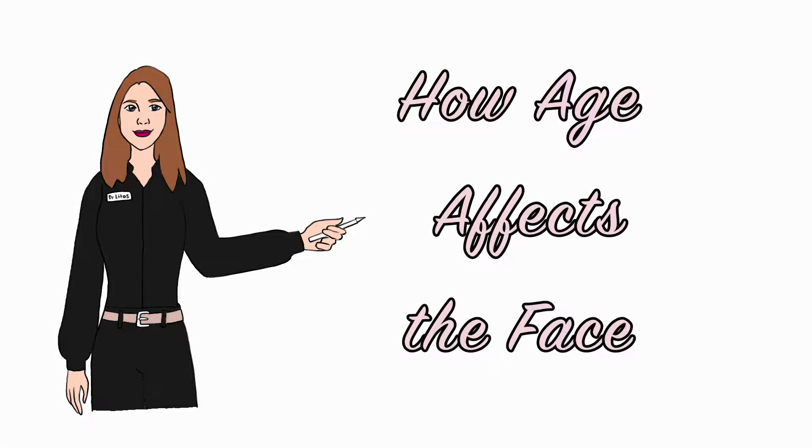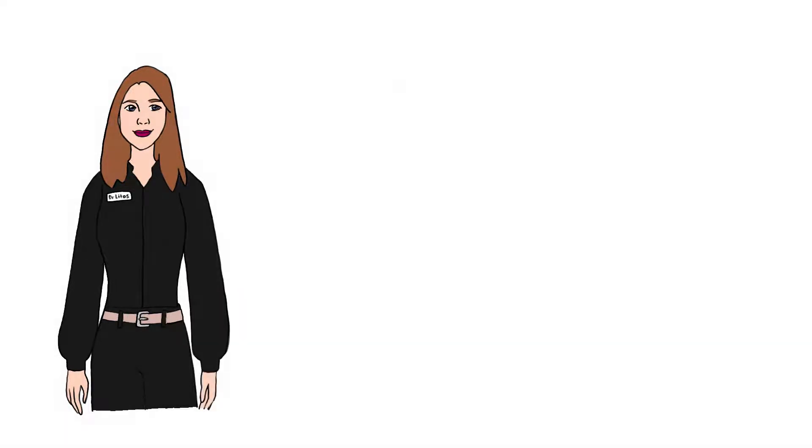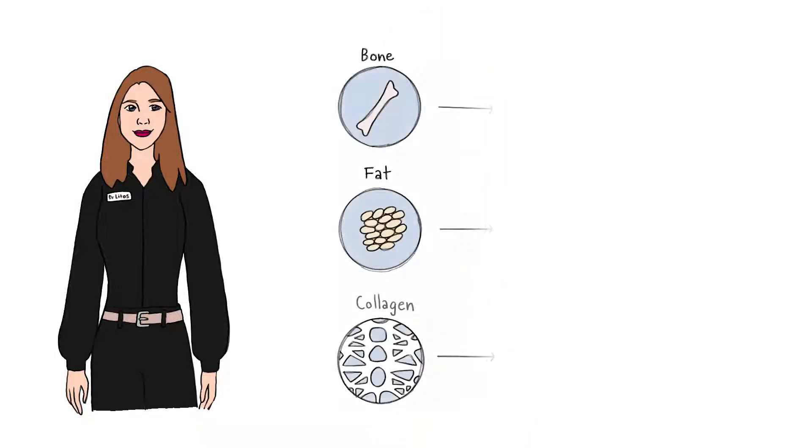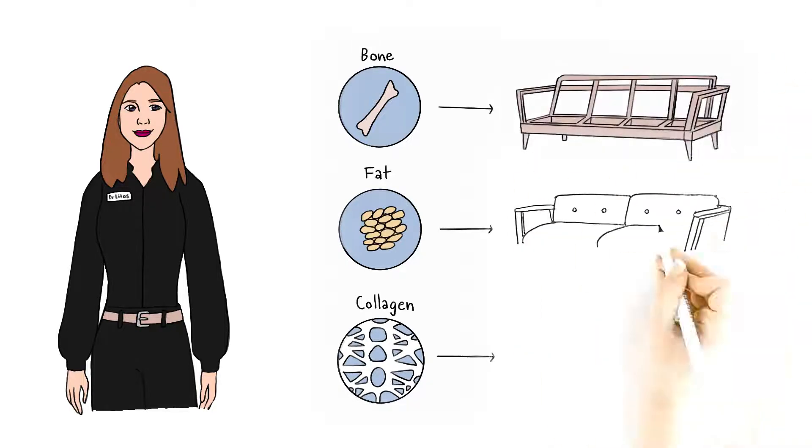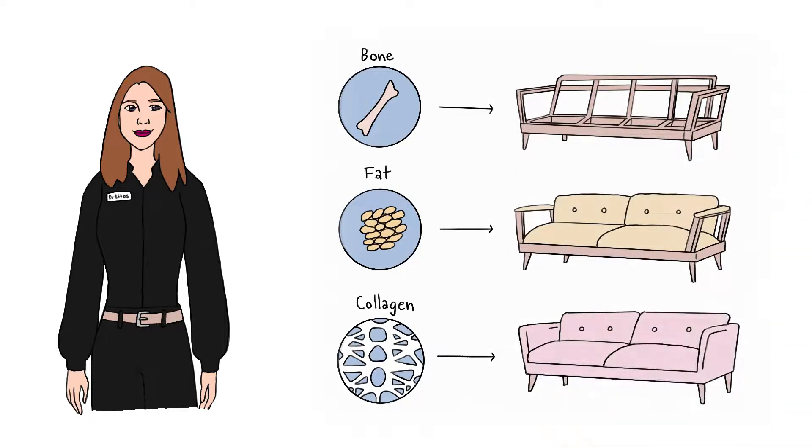Dr. Lidos explains how age affects the face. There are three important materials that give your face volume and support: bone structure, fat, and collagen. Think of it like your sofa. Bones are like the frame, fat is like cushion, and skin is like upholstery. As your body ages, all three of these materials experience changes.